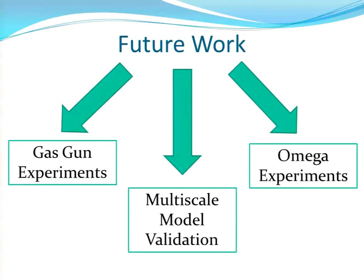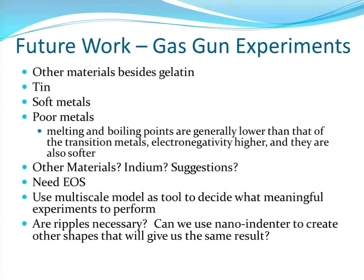Now just quickly, I'll talk about what's in the future for this work. For the gas gun experiments, we're interested in doing this using tin as the material. Ballistic gelatin was easy but not that interesting — doesn't have a lot of application. But tin is a soft enough metal that we might be able to hit it hard enough to flow. Pretty much anything we have a good equation of state for we can put in our model, and if we could use that in gas gun experiments at Caltech, we could compare it, which could be really interesting.